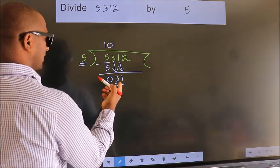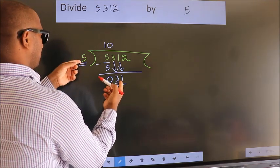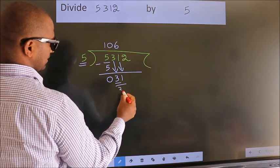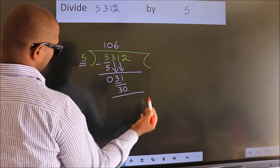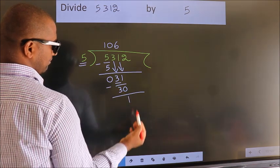A number close to 31 in the 5 table is 5 times 6, which is 30. Now we subtract. We get 1.